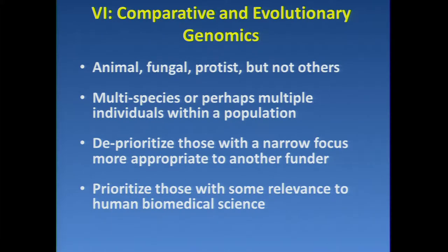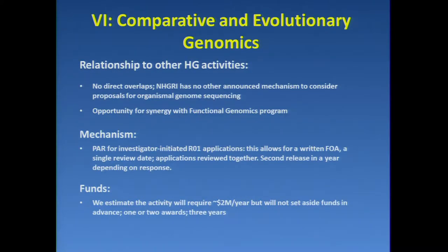We would deprioritize those with a narrow focus more appropriate to another institute. Some other institutes do have an area of interest in very specific parts of this. And we would prioritize those with some relevance to human biomedical research. There are no direct overlaps with other programs. We have no announced mechanism to consider programs for organismal sequencing — we had sent a big signal that we were no longer going to be doing that. We needed to focus on disease, and we also thought that a lot of comparative genomics would be picked up by others.